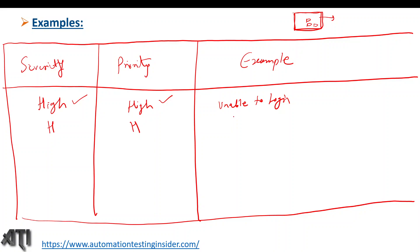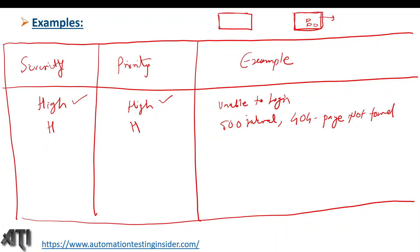Another example of high priority and high severity: launching a website and getting a 500 Internal Server Error or a 404 Page Not Found. These are high priority and high severity because the impact is very high — we cannot launch the application at all. This defect is very important to fix as early as possible because until it is fixed, we cannot move further with testing.